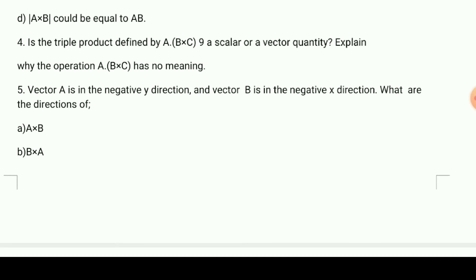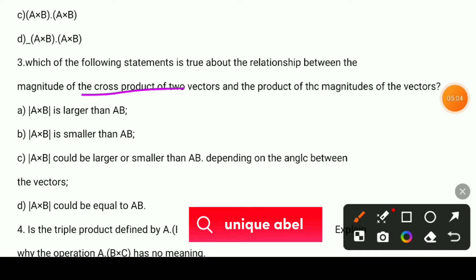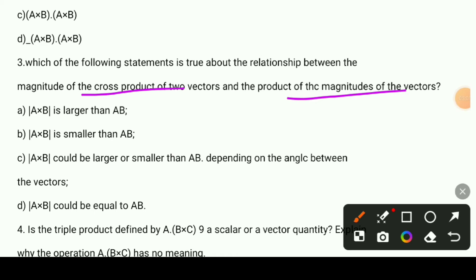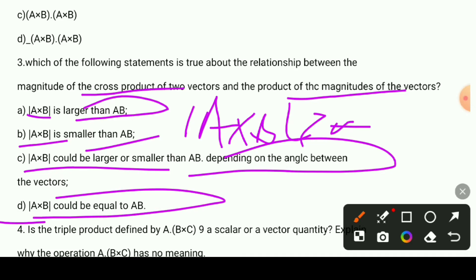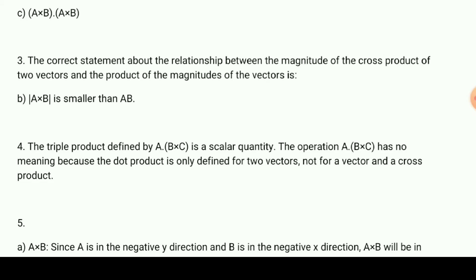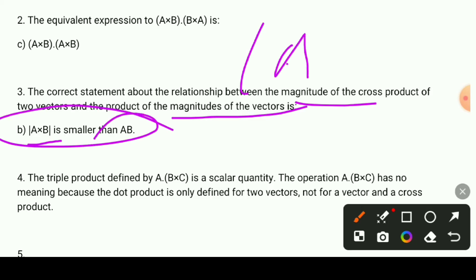The next statement concerns the relationship between the magnitude of the cross product and the product of the magnitudes. Is |a×b| larger than |a||b|? Is it smaller? The magnitude of a×b equals |a||b|sinθ, so it is smaller than or equal to |a||b| because the magnitude is bounded by the product of the magnitudes.